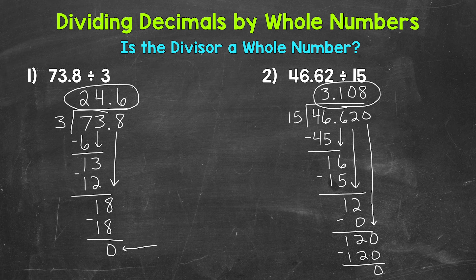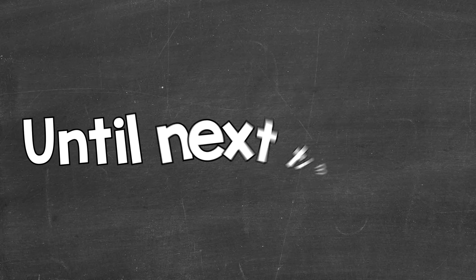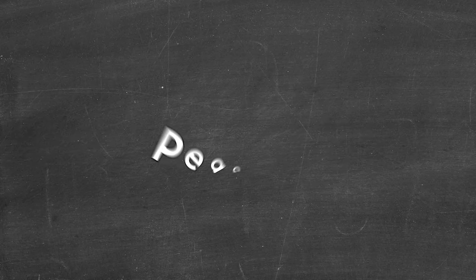So there you have it — that's how you divide decimals by whole numbers. Remember, always check: is the divisor a whole number? If so, bring that decimal straight up into the answer. In this video the divisors were whole numbers. I will cover what we do when the divisor is not a whole number in other videos — those links are down in the description. I hope that helped. Thanks so much for watching. Until next time — peace.